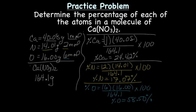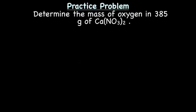So, the percent mass of calcium is 24.42 percent. Percent mass of nitrogen is 17.07 percent, and the percent mass of oxygen is 58.50 percent. So, hopefully, you don't see this as being too bad. So, now, the next part is to use this percent to do something else.